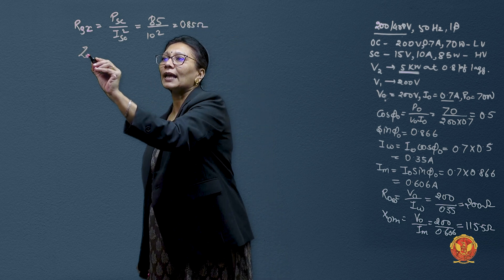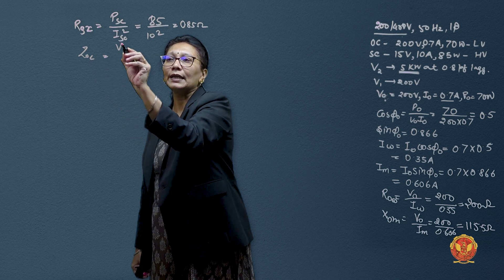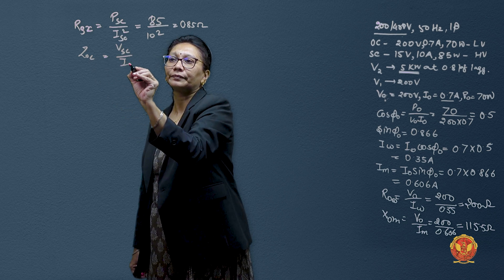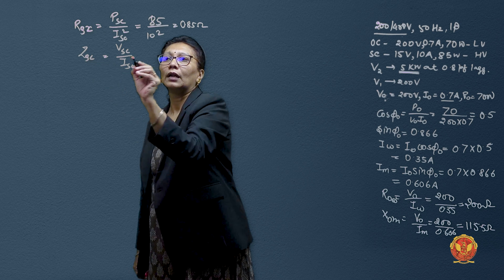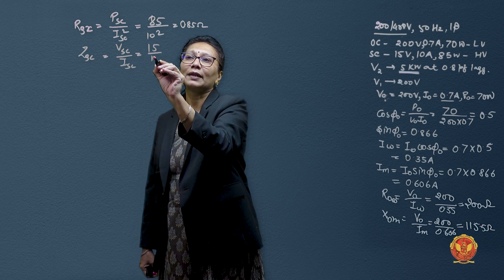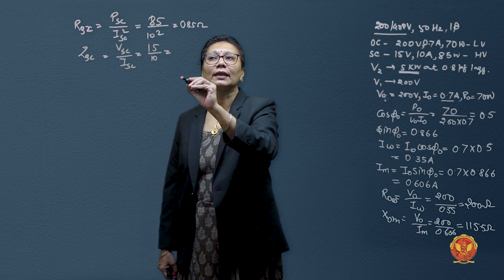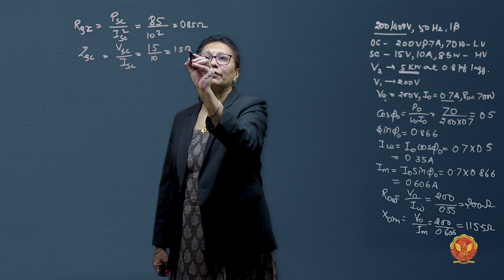Similarly, impedance can be taken from VSC by ISC. We have 15 volt and current is 10 ampere. So it comes out to be 1.5 ohms.